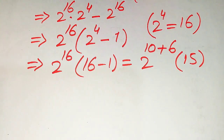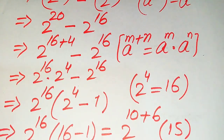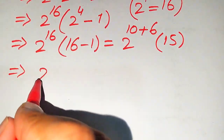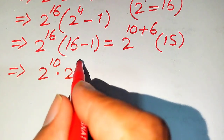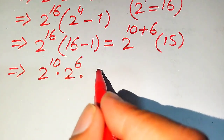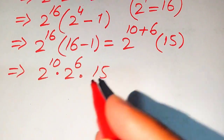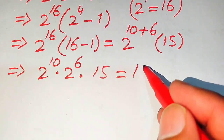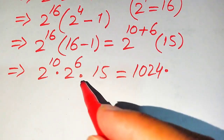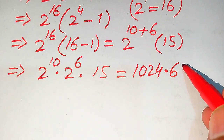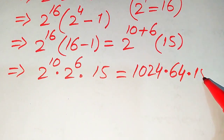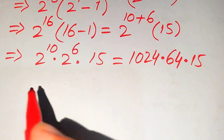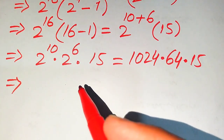We write 2^16 as 2 to the power of 10 plus 6, and apply the exponent law again. This gives us 2^10 multiplied by 2^6, multiplied by 15. We know that 2^10 equals 1024 and 2^6 equals 64, so the expression becomes 1024 times 64 times 15.